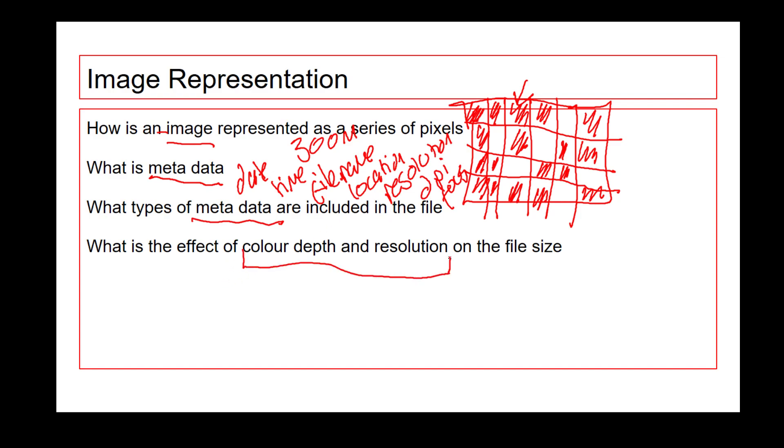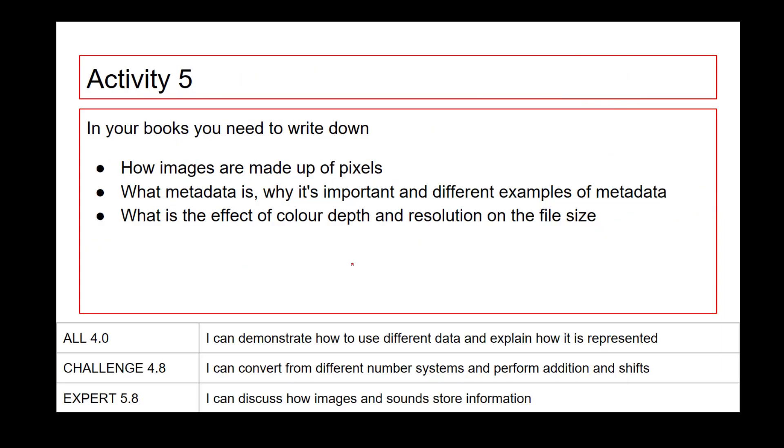If we're thinking about colour depth and resolution, the more colours you've got, so at the moment here, we've only got two colours. So if each value is either one or zero, that image there would be 32 bits because it's only recording if it's one or zero. If each one of these could be 10 colours, instead of having 32 bits, we're going to need 320 bits. If we're going to have 1,000, we would need 3,200 bits or 3.2 kilobytes. So the more colours you've got, the larger the file size. The resolution, I'm going to let you research that one. So I want you to be talking about how images are made up of pixels, what metadata is, why it's important. And what is the effect of colour depth and resolution on the file size? That last bit there for resolution, you're going to have to do a little bit of research.